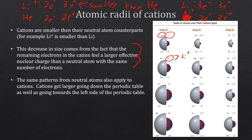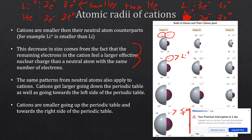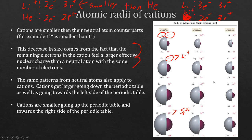So rubidium plus is larger than strontium two plus since as you go towards the right you get smaller. Cations are smaller going up the periodic table and towards the right side. To summarize: get small as you go up and right, big as you go down and left.